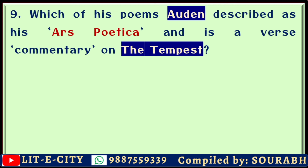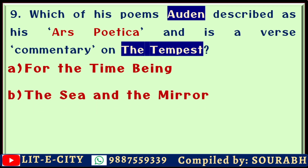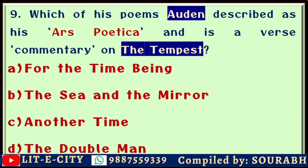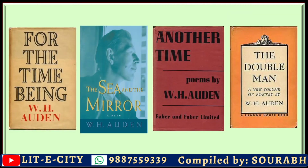Which of his poems did Auden describe as his 'ars poetica'? It is actually a verse commentary on Shakespeare's 'The Tempest.' W. H. Auden is a towering figure between the wars and after, with many poems considered hallmarks of the modernist tradition. The options are 'For the Time Being,' 'The Sea and the Mirror,' 'Another Time,' and 'The Double Man.' The correct answer is 'The Sea and the Mirror,' the only one among these that is a commentary on Shakespeare's 'The Tempest.'